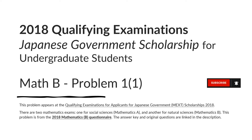Please hit subscribe. This problem appears at the Qualifying Examinations for Applicants for Japanese Government or MEXT Scholarships 2018. There are two mathematics exams, one for Social Sciences Mathematics A and another for Natural Sciences Mathematics B. This problem is from the 2018 Mathematics B questionnaire. The answer key and original questions are linked in the description.